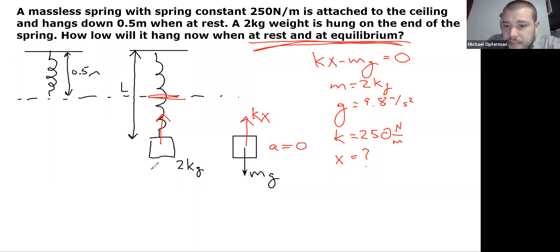So x is basically my unknown. If I solve that equation for x, I've got x equals mg over k. So that's going to be 2 times 9.8 over 250, which is 0.078 meters, 7.8 centimeters.